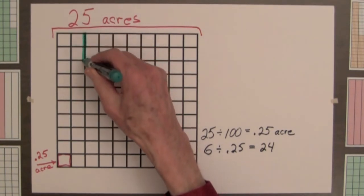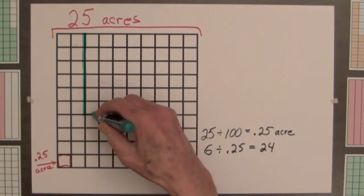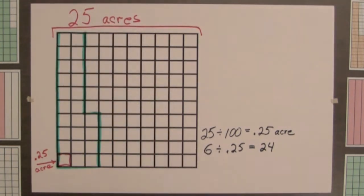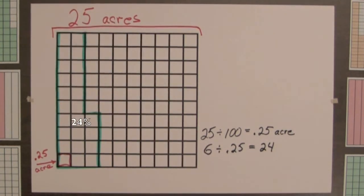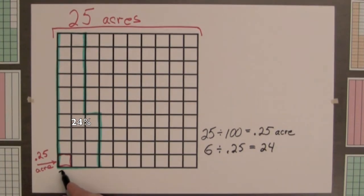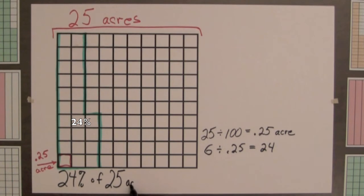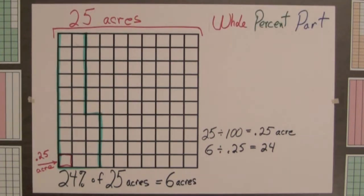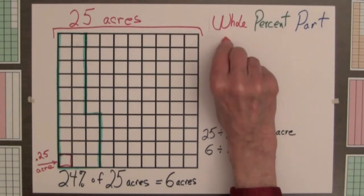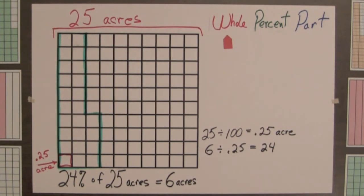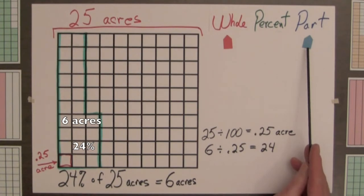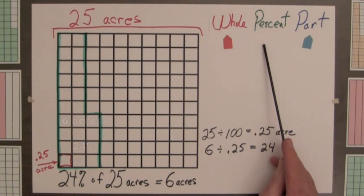So, 24 small squares, or 24 percent of the land, will be playground. 24 percent of 25 acres equals 6 acres. In this example, we are given the whole, 25 acres, and the part, 6 acres, and we show that 6 acres is 24 percent of the whole.